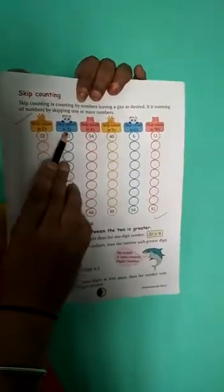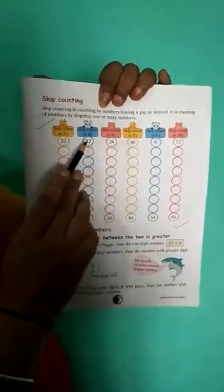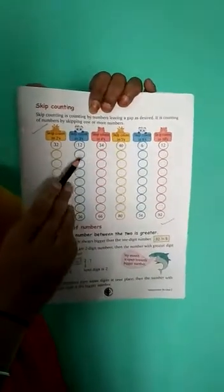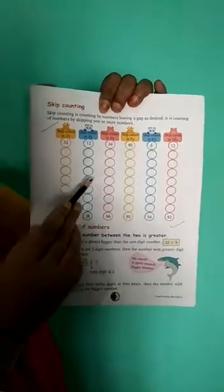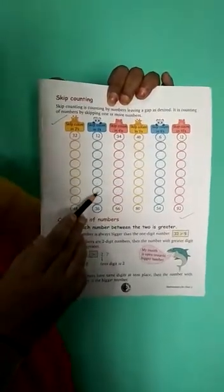Here second question is 6. Here written skip count in 3s. 3s means here you have to skip 3, 3 numbers. So 12, after that 15, 18, 21, 24, 27, 30, 33, 36. Like this you do all the sums. Okay?